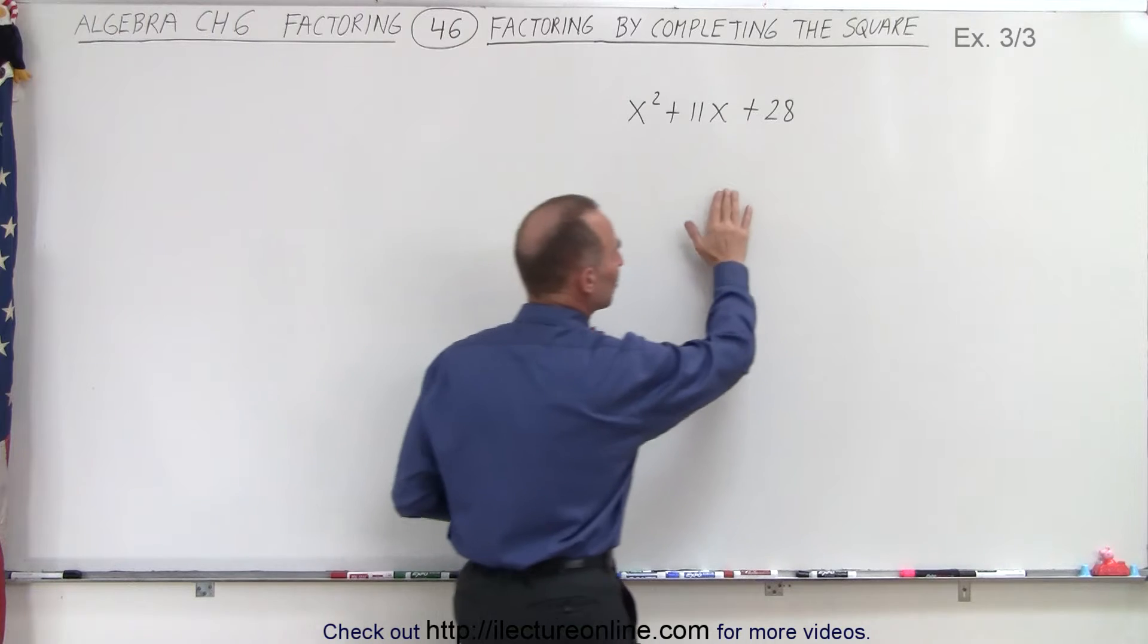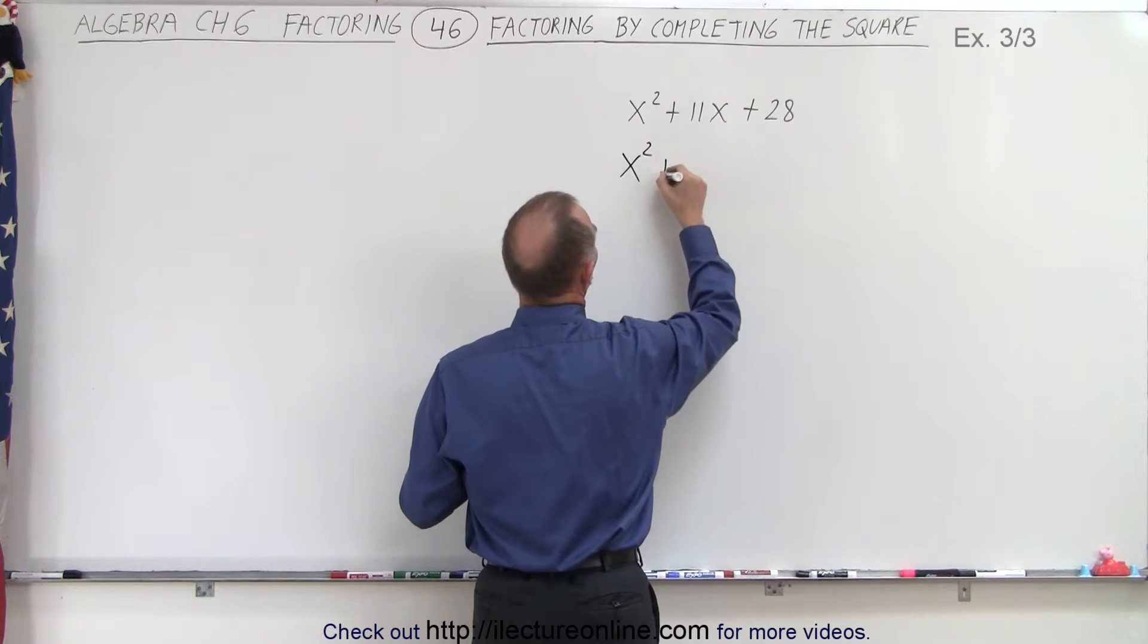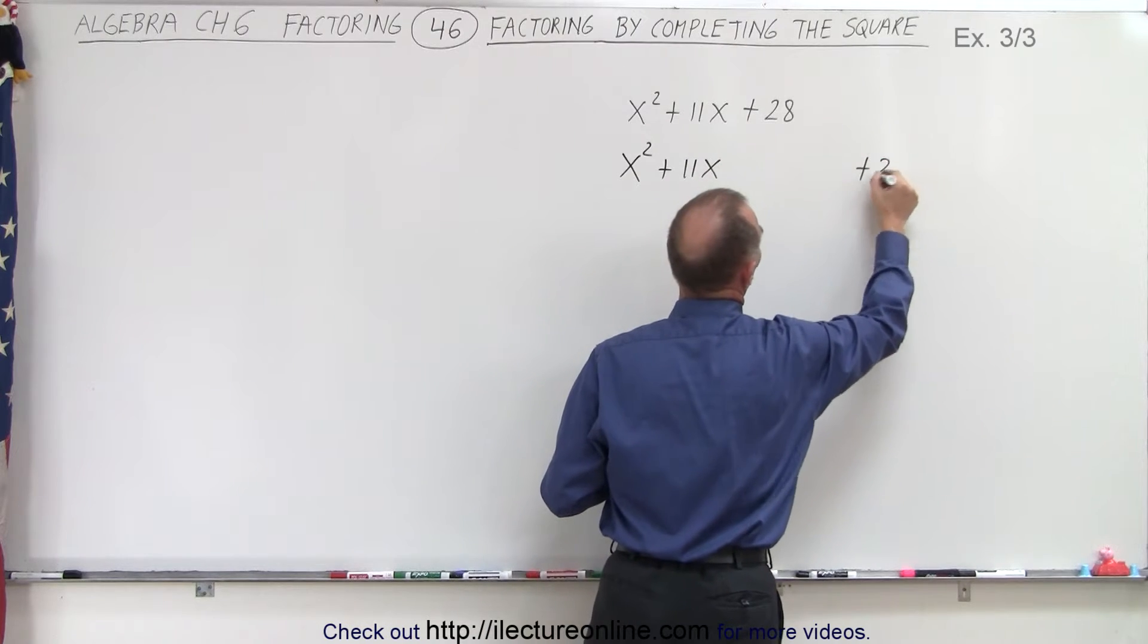So again, we're going to take the number 28 and move it to the right to make space. So we have x squared plus 11x and plus 28.